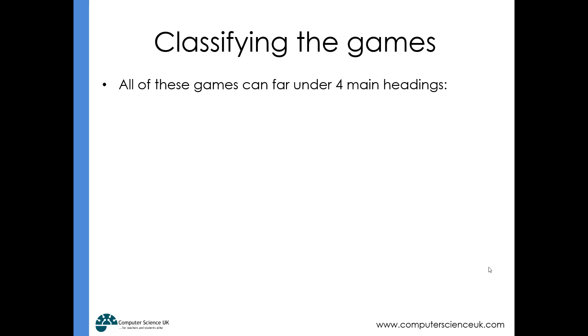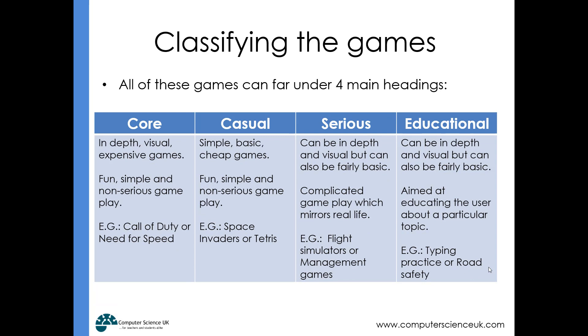You could classify these games under four main headings. Core games are in-depth, visual, expensive games with non-serious play—really fun but very expensive to develop, mainly because of the graphics. Casual games are the ones you might have online or as phone apps—basic, cheap games that are fun, simple, and non-serious.